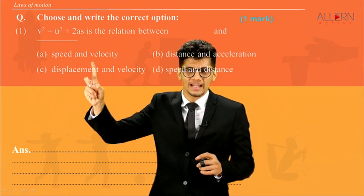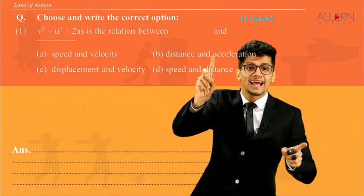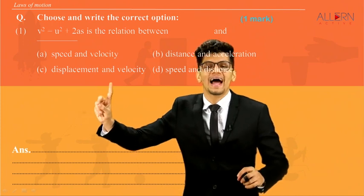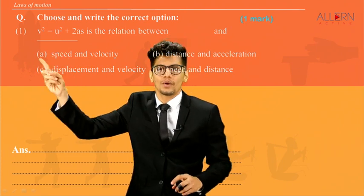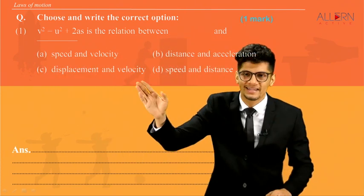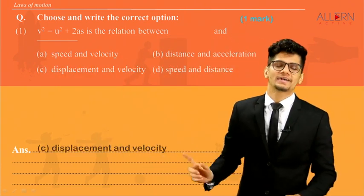Let us see which option has it. Speed and velocity? No. Distance and acceleration? No. Displacement and velocity? So we can either call it as a displacement-velocity relation or velocity-displacement relation. That means the correct answer is C, that is displacement and velocity.